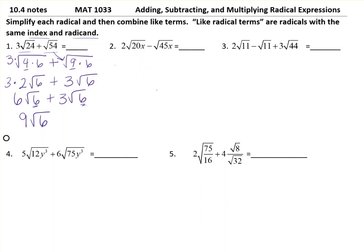Likewise, when I have x's and y's it works very much the same. I have a 5 out front. I don't want to lose that. √12 can break down into 4 times 3 times y² times y. If you remember your exponent rules, when I'm multiplying I add. I do this because this y² is a perfect square and now it will come out front.